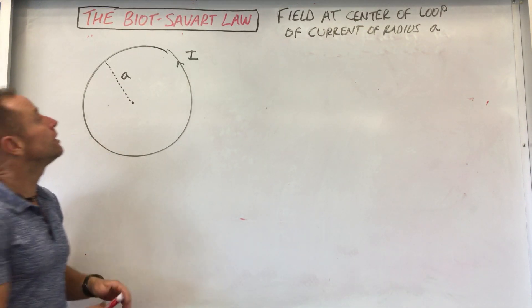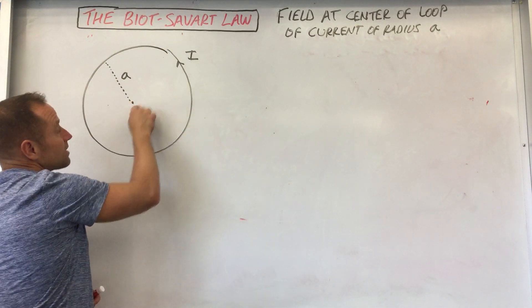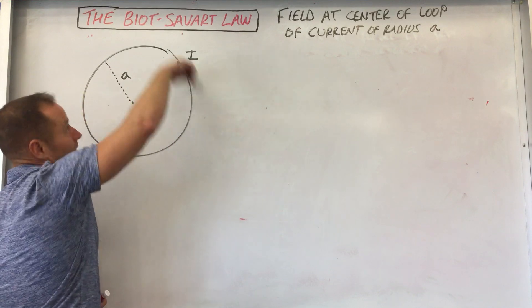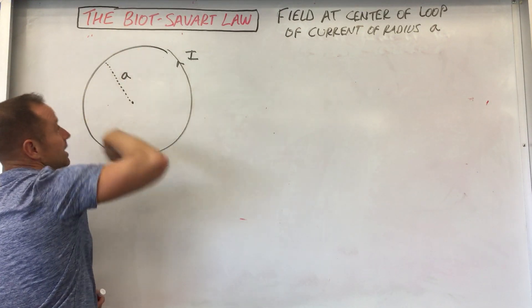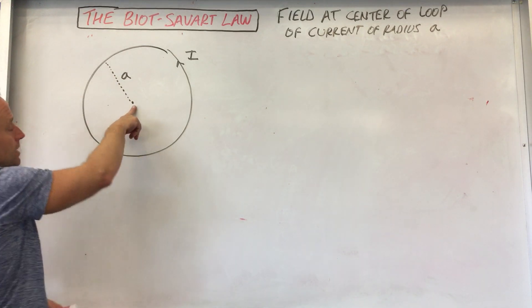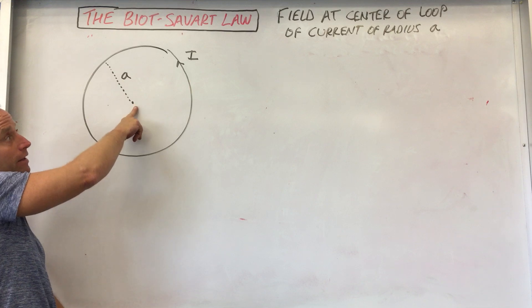So what we're supposed to do here is find the magnetic field that's created at the center of a circuit that's basically shaped like a circle where currents just run around the circle of radius a. And so what we're going to try to do is calculate the strength and direction of the field here in the middle.